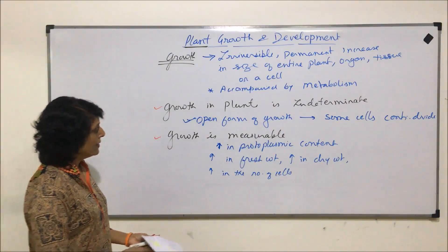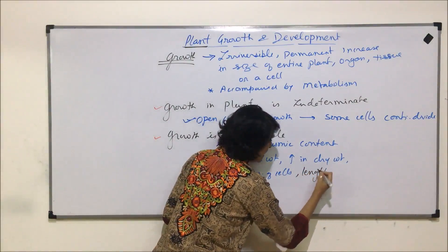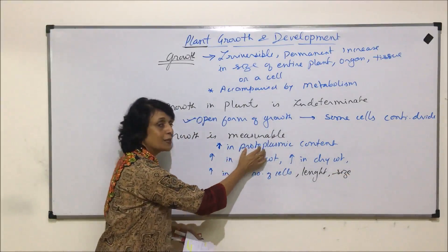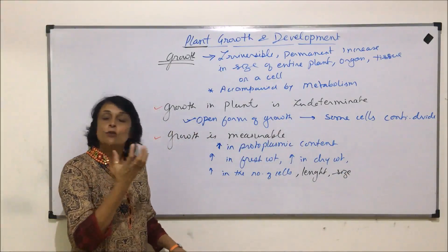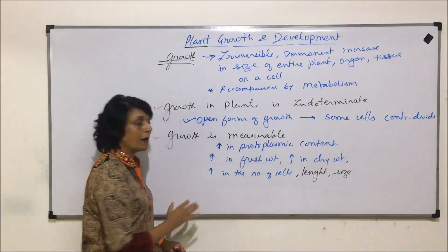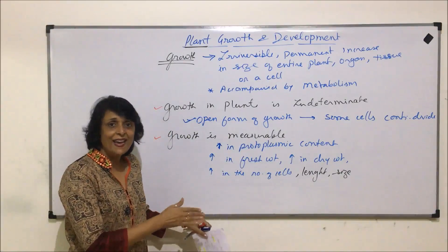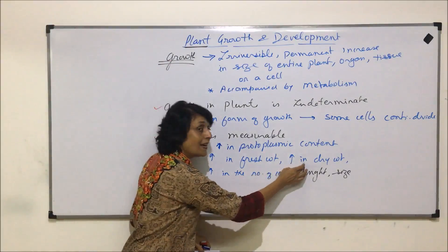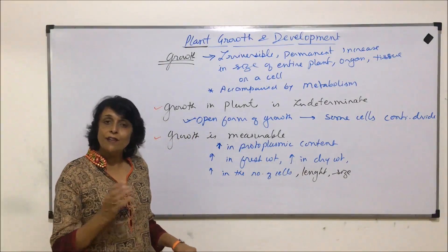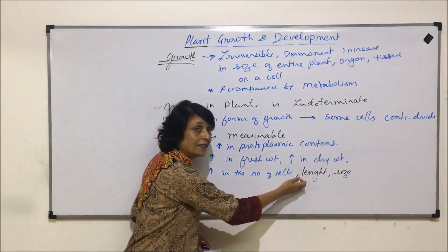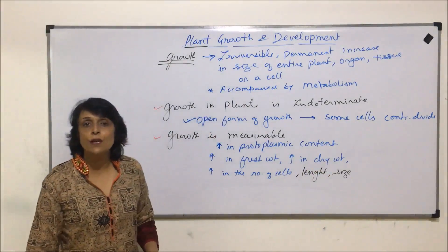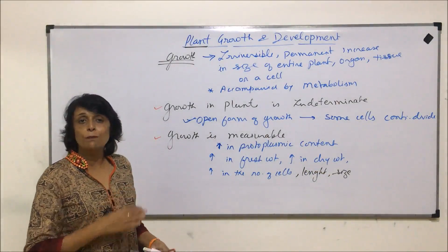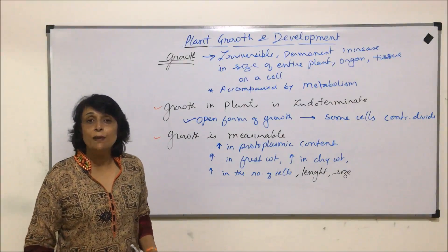We can also include increase in length and increase in overall size. If we have to calculate that protoplasmic content has increased, it is very difficult to assess directly. But if we measure fresh weight — how much organic matter is synthesized at time A and at time B — it can easily be concluded that growth has taken place. Dry weight is measured after removal of water content. We can compare initial and final time values and see increase in length, size, and number of cells. So, growth in plants, though indeterminate, can be measured.